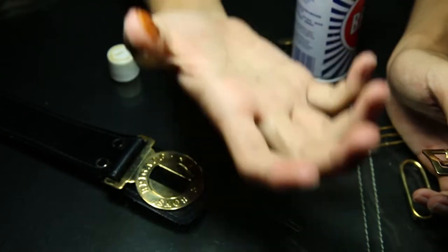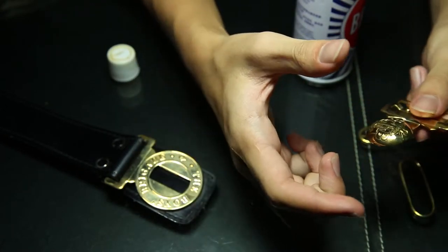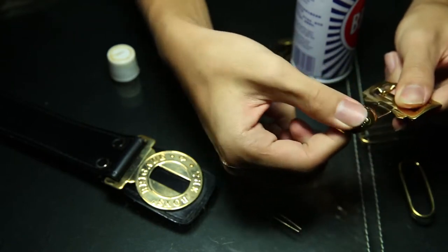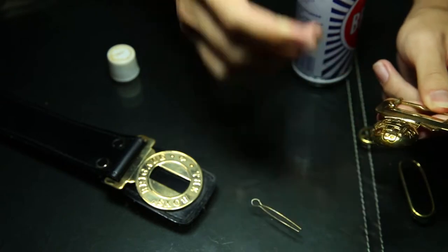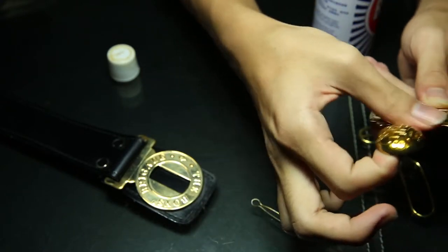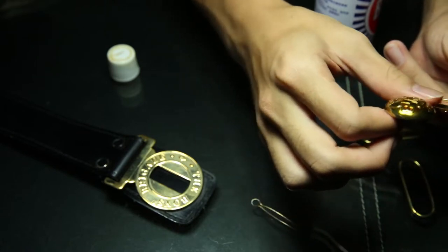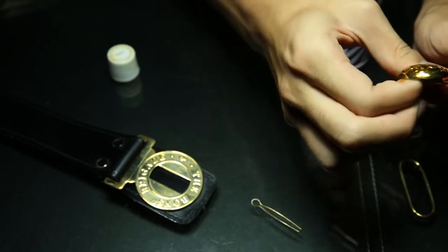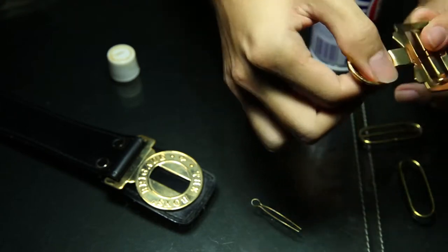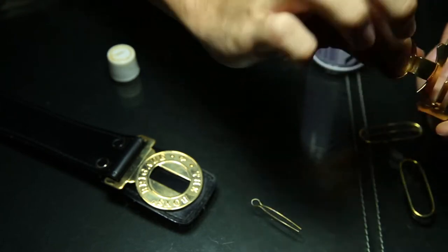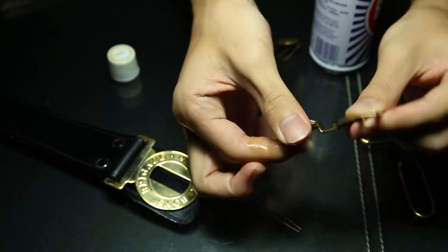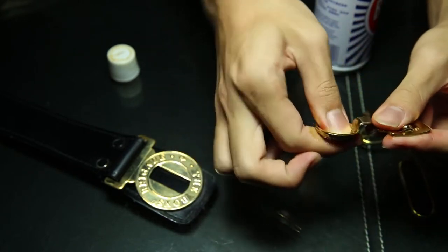You will be left with Brasso on your fingers. Use this Brasso and rub all over the belt buckle. Add more as necessary. Just keep rubbing and not forgetting the back as well. Remember that you will have to polish the whole metal part, not only the parts that are visible normally.